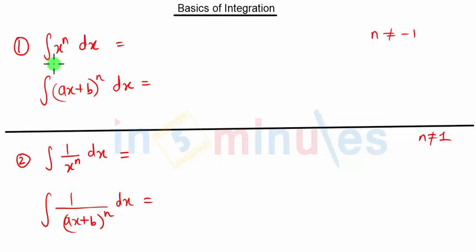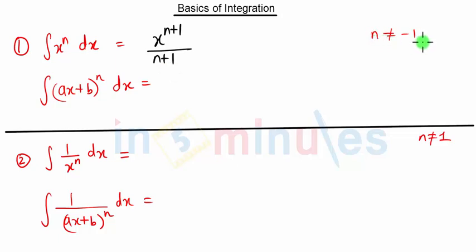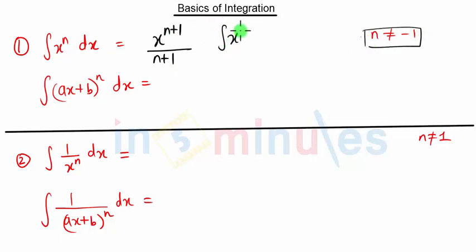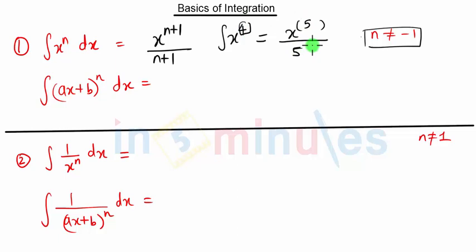The integration of x raised to n is nothing but x raised to n plus 1, upon n plus 1. An important condition: n should not be equal to minus 1, because minus 1 plus 1 becomes 0 and the term is undefined. For example, the integration of x raised to 4 — we just increase the power and that power also goes in the denominator. Very simple.